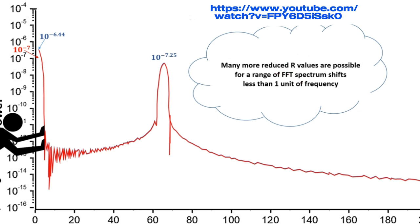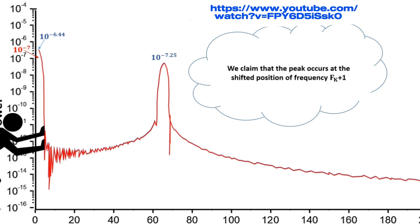Many more reduced r are possible for a range of spectrum shifts, less than one unit of frequency. We claim that the peak occurs at the shifted position, fk plus 1. 64.6, instead of the initial 63.6 units of frequency in this example.